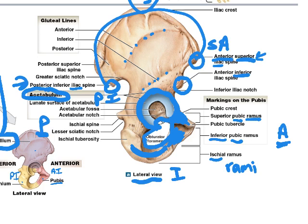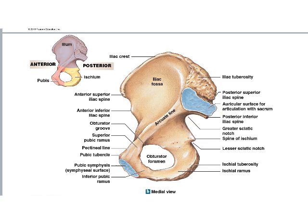Inferiorly, another important structure is the ischial spine, which is important for obstetrics — the baby has to be able to pass through that area. It's sometimes part of the obstetrical exam when evaluating how open a woman's pelvis is to allow a baby through. Now we'll change from the lateral view to a medial view — looking at the inside of the pelvic bone.